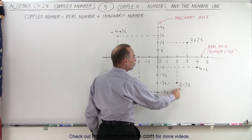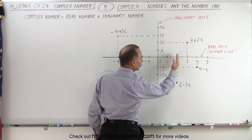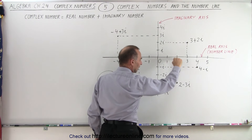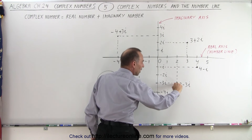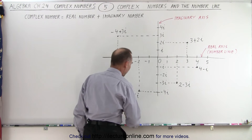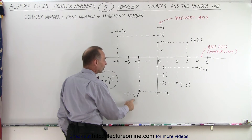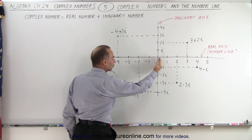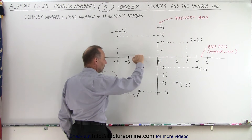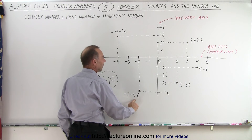Here you have 2 minus 3i: you move 2 units to the right on the real axis and 3 units down on the imaginary axis. How about negative 2 minus 4i: you move 2 units to the left on the real axis and 4 units down on the imaginary axis.